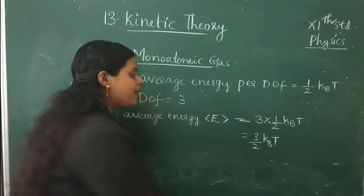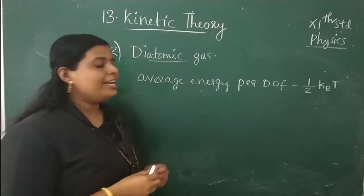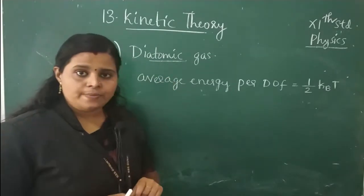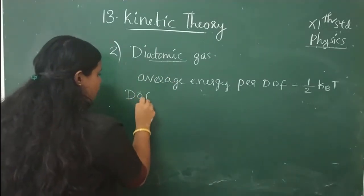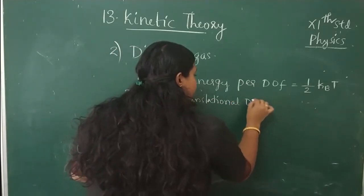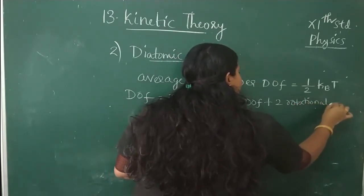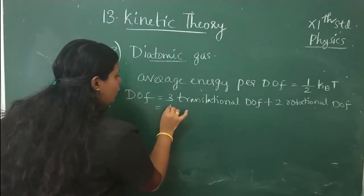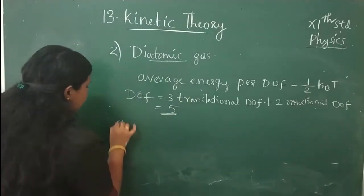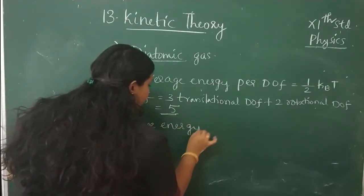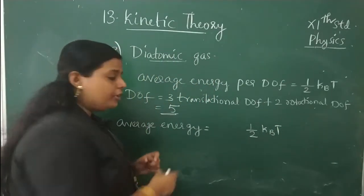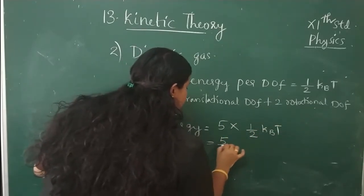For a diatomic gas or diatomic molecule, the average energy per degree of freedom is ½K_BT. The total degrees of freedom is 3 translational + 2 rotational = 5. So the average energy E = 5 × ½K_BT = 5/2 K_BT.